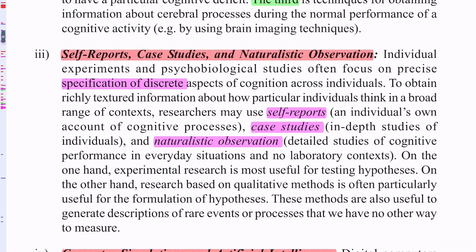On the other hand, experimental research is most useful for testing hypotheses. Research based on qualitative methods is often particularly useful for the formation of hypotheses and to generate descriptions of rare events or processes that we have no other way to measure.